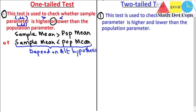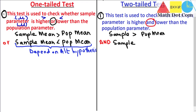Now what about the two-tailed test? A two-tailed test is used to check whether the sample parameter is higher and lower than the population parameter. The key difference is the use of 'and' instead of 'or'. In a two-tailed test we check in both directions — that is, whether the sample parameter is greater than the population parameter and whether the sample parameter is lower than the population parameter. We have to check both possibilities.